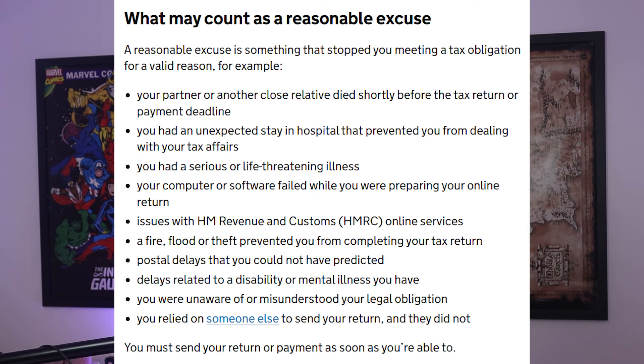In relation to all of these deadlines, failure to meet them will often result in penalties being issued. HMRC will only waive penalties in rare situations where you can provide them with a reasonable excuse. Reasonable excuses might include the death of a close family member shortly before a deadline, an unexpected hospital stay that prevented you from dealing with your tax affairs, your computer or software failing whilst you were preparing your online return, or a fire or flood that prevented you from completing your tax return. These excuses are unlikely to apply in most situations, and where they do, you may be asked to provide supporting evidence.